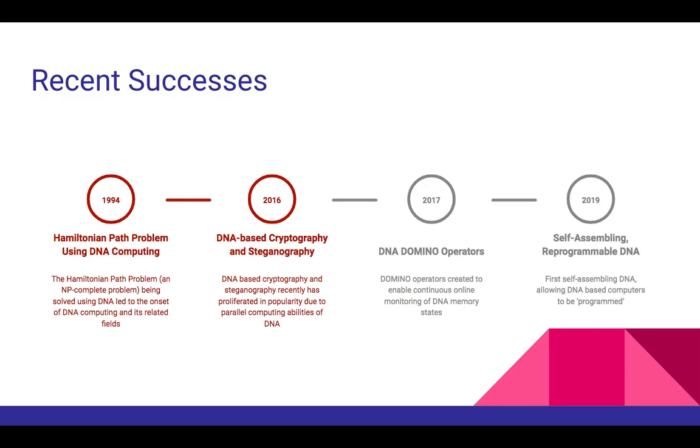With DNA computing being a relatively new field, many practical uses have not been found for this new technology. However, proof of concept exists given that a few major breakthroughs have been made in the field. The first of these recent successes occurred in 1994, when the Hamiltonian path problem was solved by Leonard Edelman, who Michael spoke of in the previous slide. The fact that this NP-complete complex problem was able to be solved using DNA served as the basis of the rest of the field.